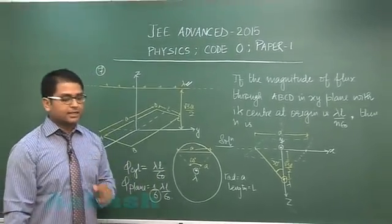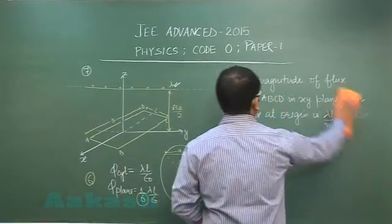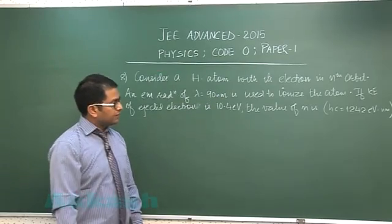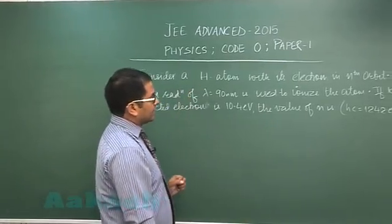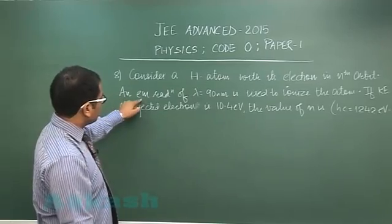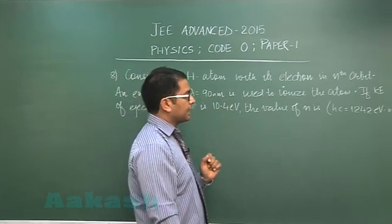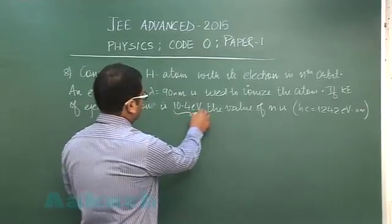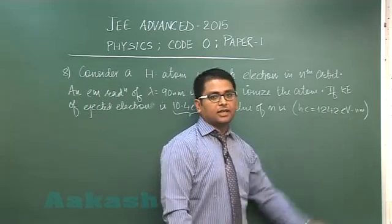Now let's move for the last integer of this particular section, question number 8. Question number 8 is again from modern physics, but this time atom. Consider a hydrogen atom with its electron in nth orbit, so quite obviously an excited hydrogen atom. An electromagnetic radiation of this much wavelength is used to ionize the atom. If the kinetic energy of the ejected electron is 10.4 electron volts, we need to calculate the value of n, and the product of hc numerical value has been given.